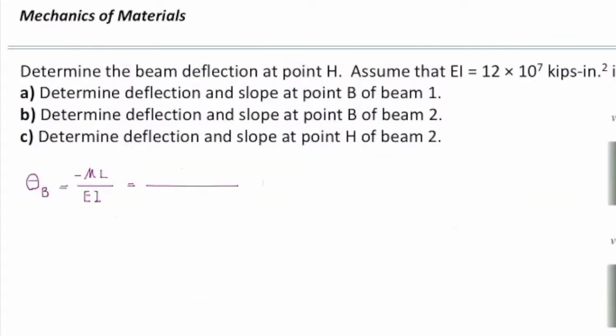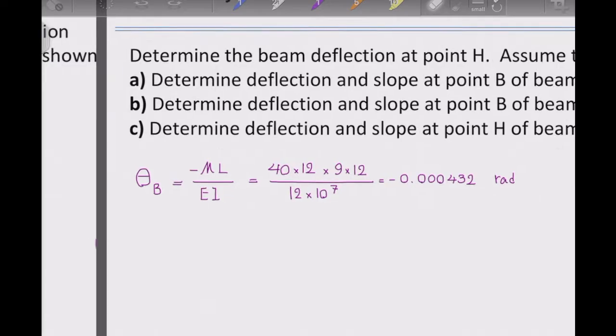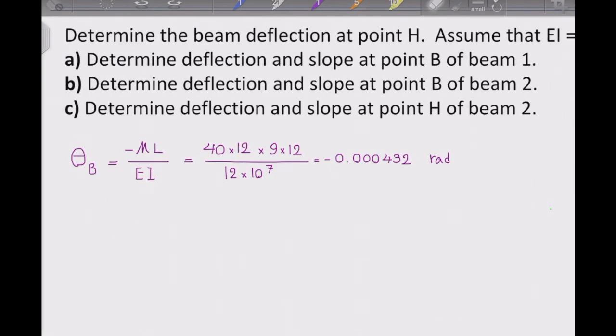I can plug the values. How much is the moment? Moment is 40 kip-ft. All units should be compatible with each other. The moment of inertia and E are given in kips inch, so I need to convert that moment into kip-inch. That would be 40 times 12 to convert that into kip-inch. The length of the beam is 9 feet.